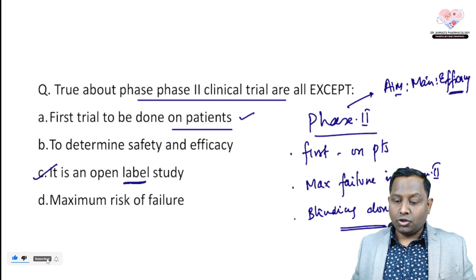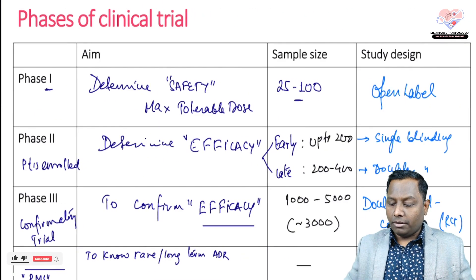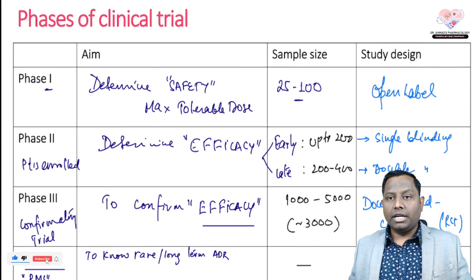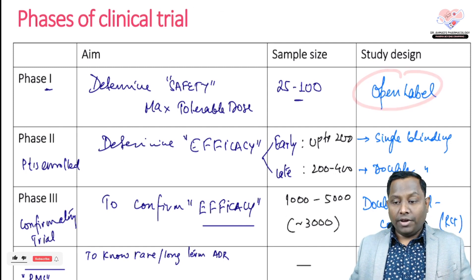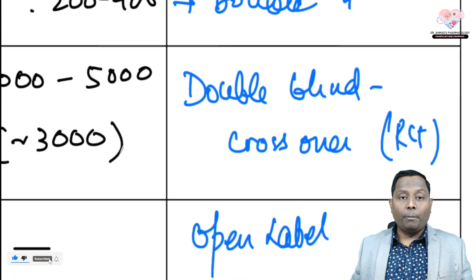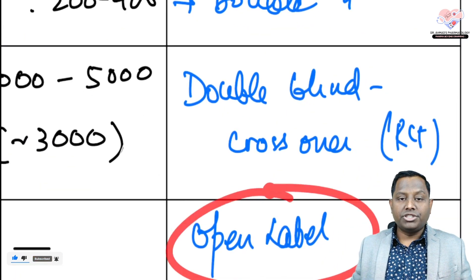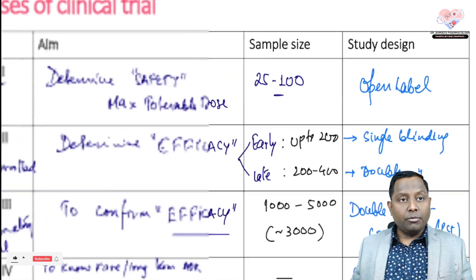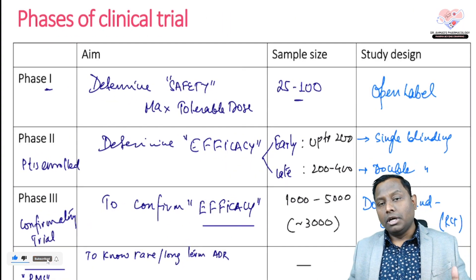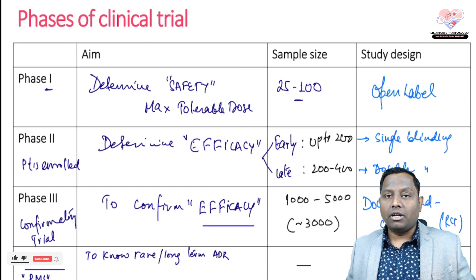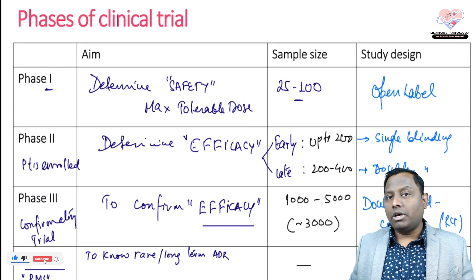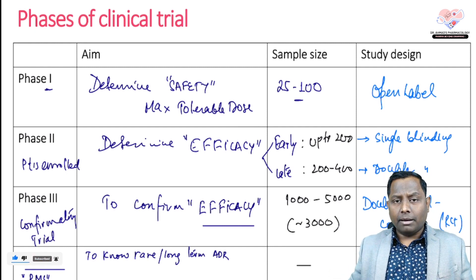Since we are discussing Phase 2, D is already ruled out. Let me quickly revise the most important points about phases of clinical trials. Open-label applies only to Phase 1 and Phase 4 — everyone is aware who is taking what compound. Single blinding means the participant is not aware; double blinding means both participant and researcher are unaware who is taking the active compound versus placebo.